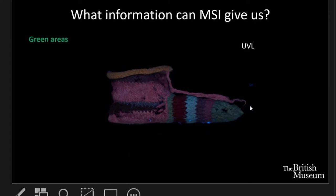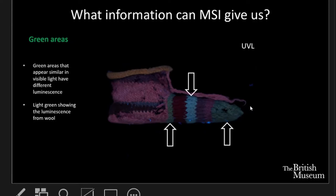We can also see differences in luminescence in the green areas that appear similar in visible light, and in this area of dark blue at the top, which shows a very clear blue-grey luminescence quite different from surrounding areas even though it appeared visibly very similar. This is very characteristic of the presence of indigo.